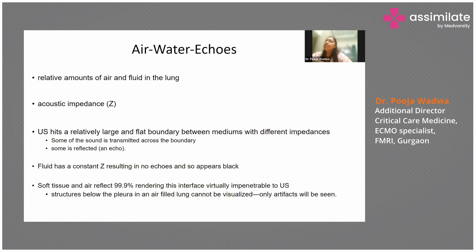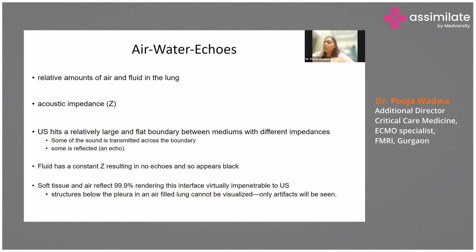What do we see in ultrasound chest? Air and water. Lungs have both air and water, and there is some pleural fluid. We find acoustic impedance — ultrasound hits a large flat boundary between two mediums with different impedances. Fluid has constant impedance and appears black on ultrasound, while soft tissue and air reflect the interface, which is impenetrable to ultrasound. Structures below the pleura cannot be visualized, so only artifacts can be seen. These artifacts, depending on what they are, are useful in our diagnosis.